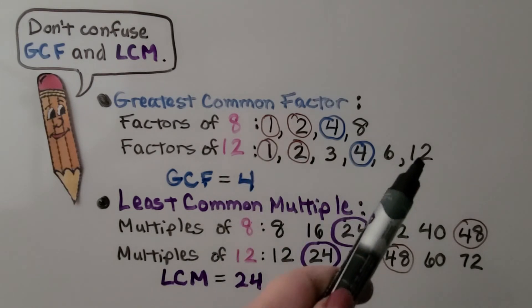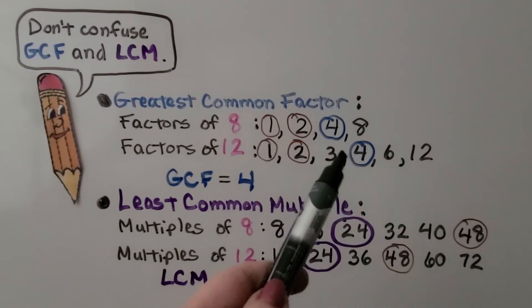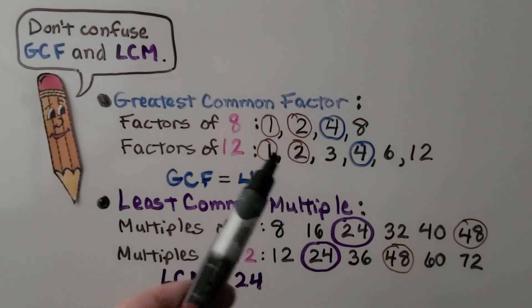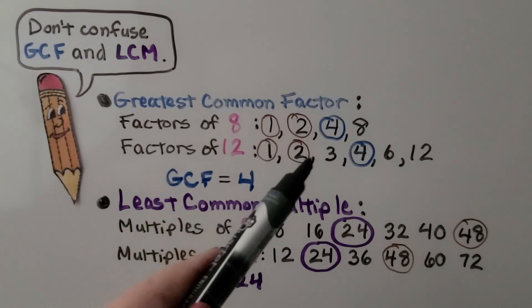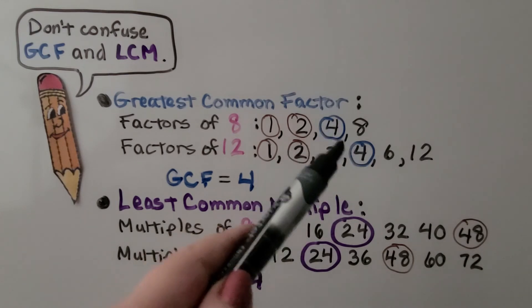1 times 12 is 12. 2 times 6 is 12. 3 times 4 is 12. Their greatest common factor, though they have 1 and 2 in common, is 4. So the GCF is 4.